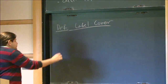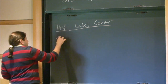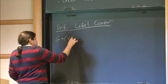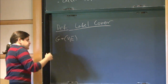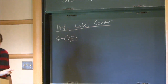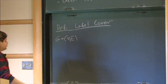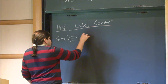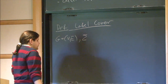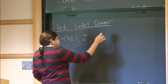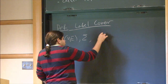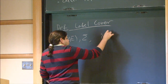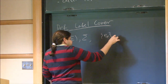We have a graph V, E — we can assume this graph is regular. We have a finite alphabet sigma, and we have a set of constraints, one for each edge.